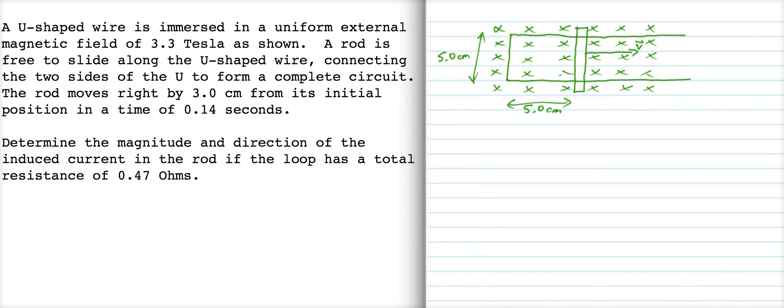Alright, so this field that we're immersed in is 3.3 tesla, and we have a rod sliding in this direction, the velocity v, and the distance traveled, delta x, is 3 centimeters.